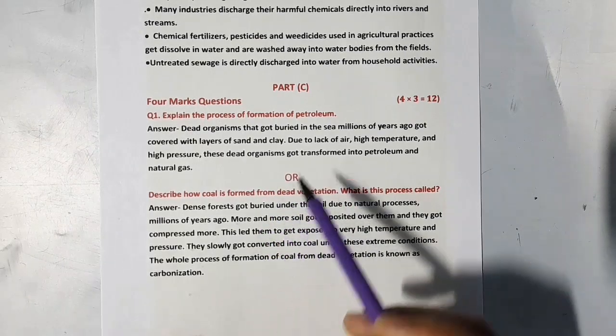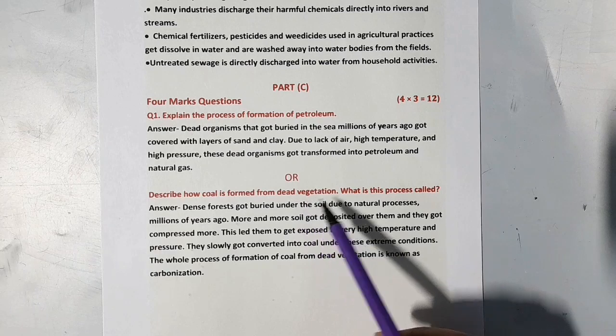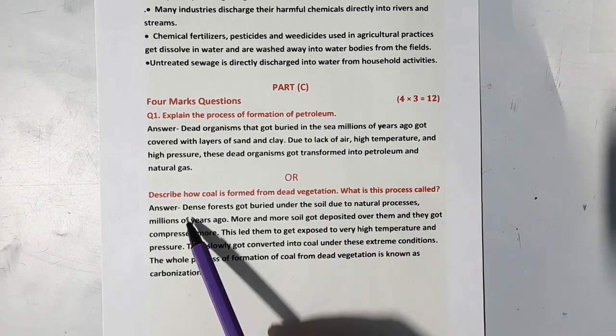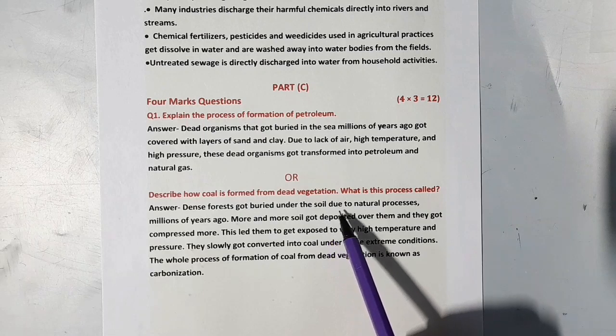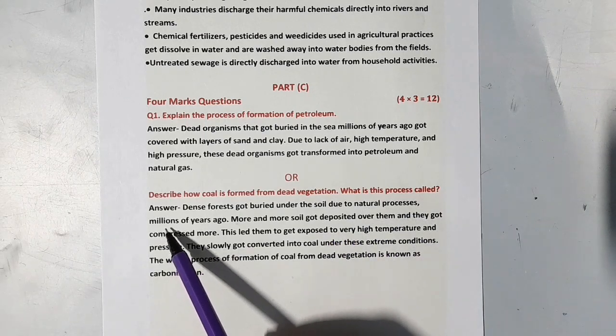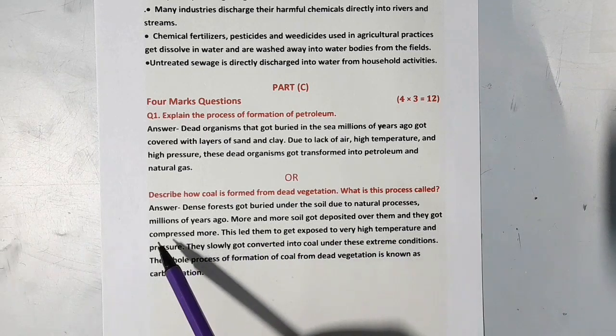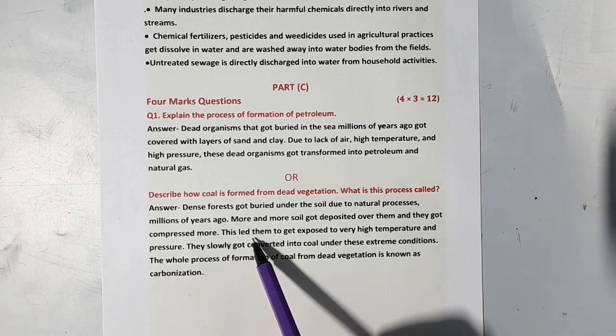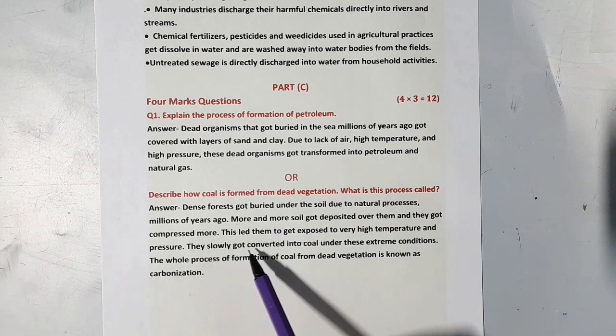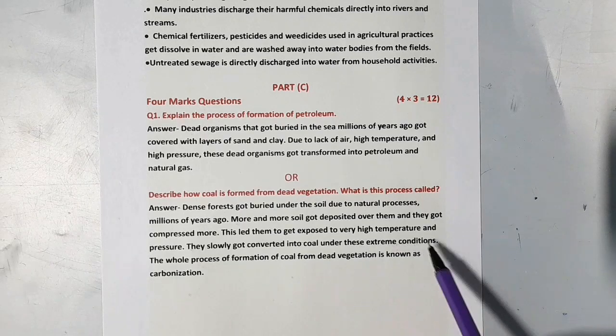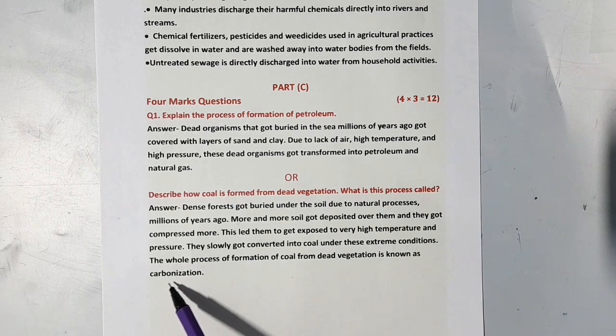Our next question in this optional question is describe how coal is formed from dead vegetation. What is this process called? Dense forests got buried under the soil due to natural processes millions of years ago. More and more soil got deposited over them and they got compressed more. This led them to get exposed to very high temperature and pressure. They slowly got converted into coal under these extreme conditions. The whole process of formation of coal from dead vegetation is known as carbonization.